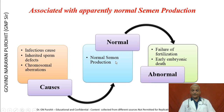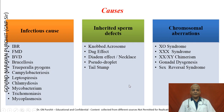Infectious causes, inherited sperm defects, and chromosomal aberrations convert normal semen into abnormal and cause failure of fertilization and early embryonic deaths. Infectious diseases include IBR, FMD, BVD, Brucellosis, Truperella pyogenes, Campylobacteriosis, Leptospirosis, Chlamydiosis, Mycobacterium, Trichomonas, and Mycoplasmosis. Inherited sperm defects include the knobbed acrosome, DAG defect, Diadem defect, pseudo droplet defect, and tail stump.